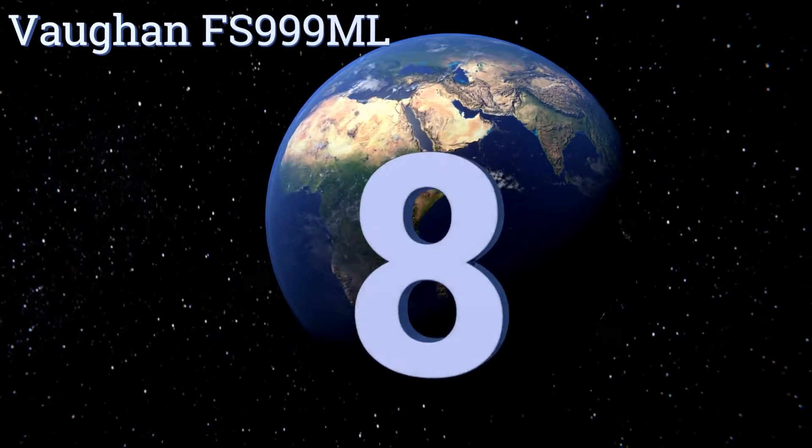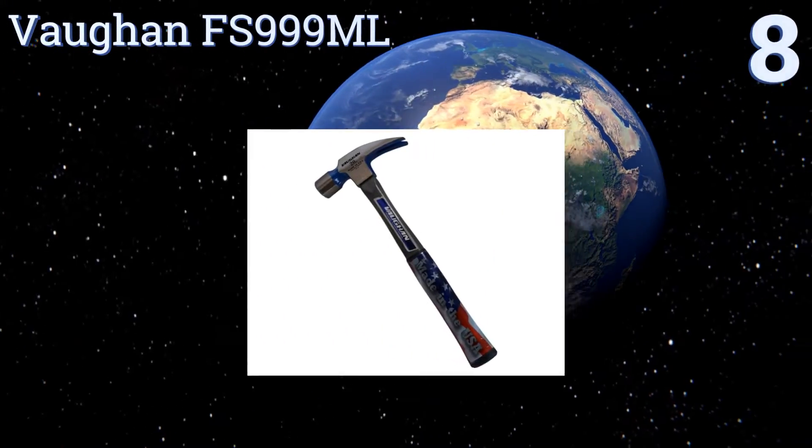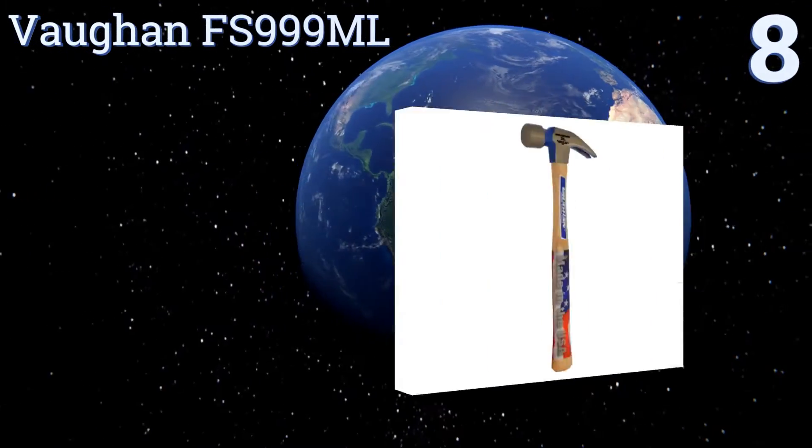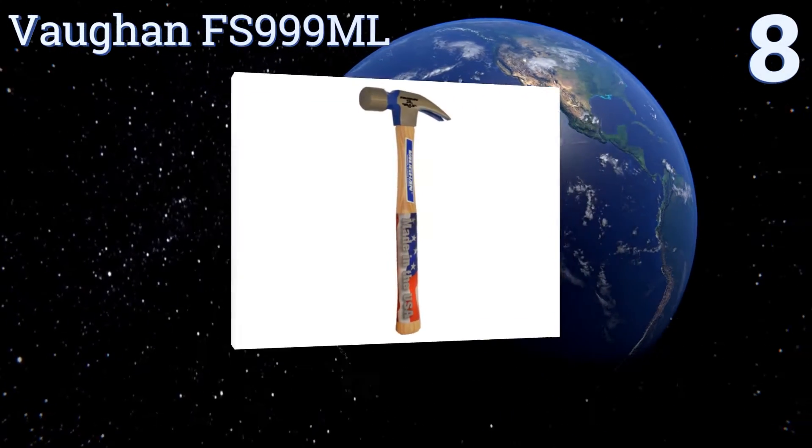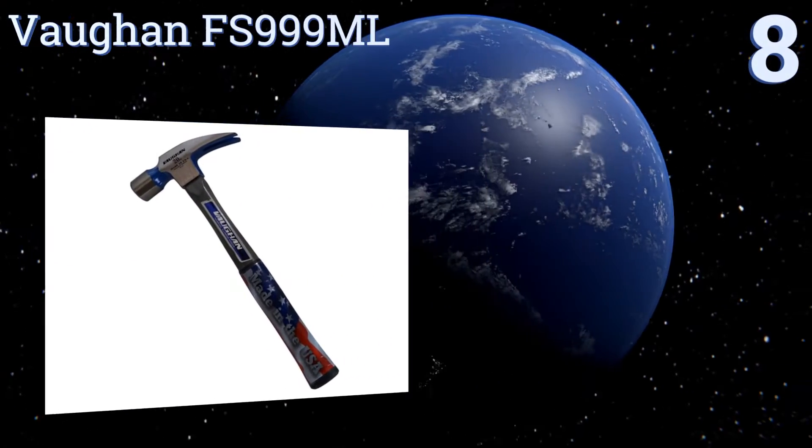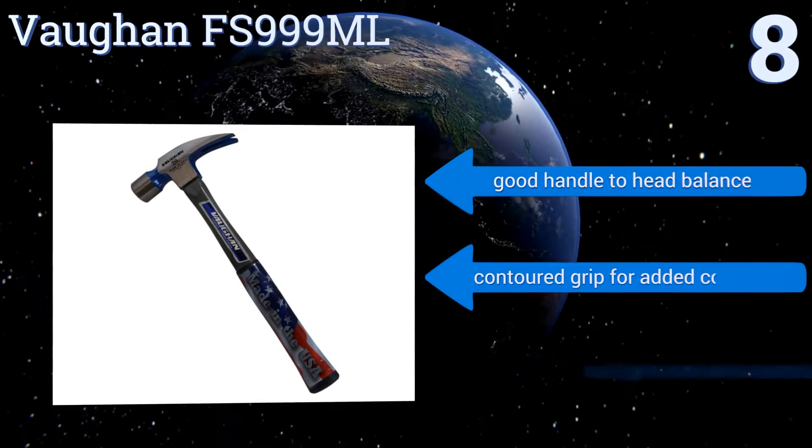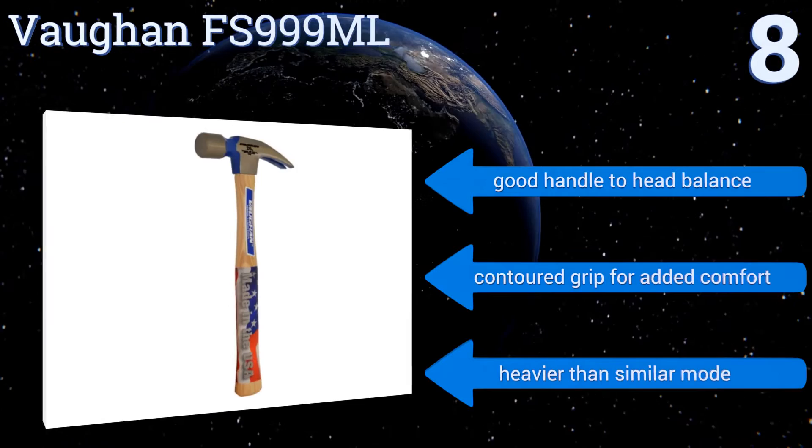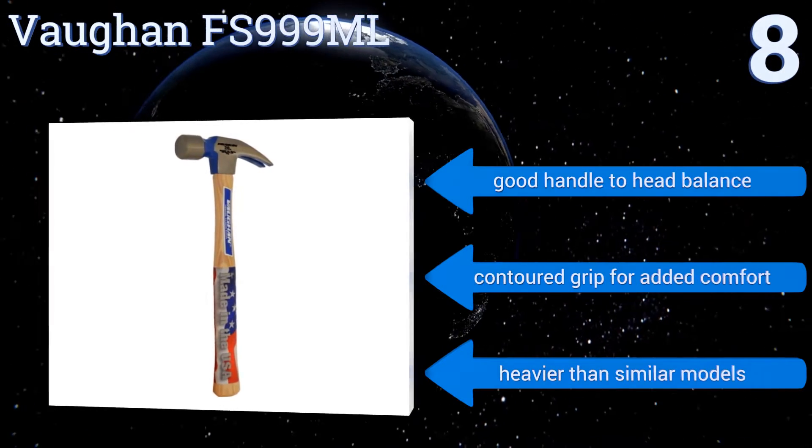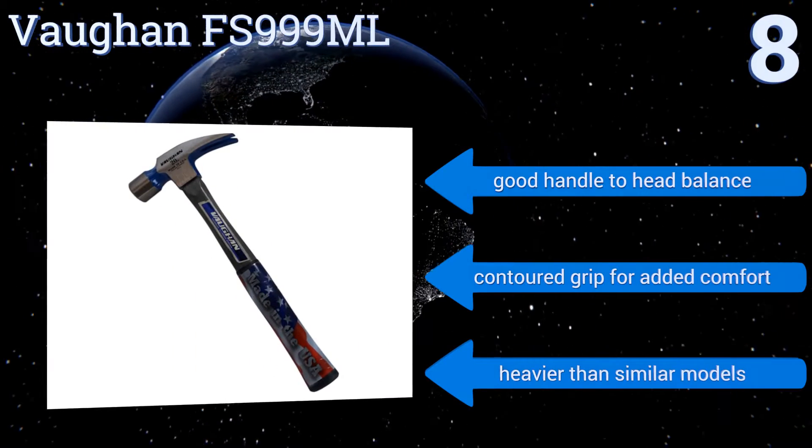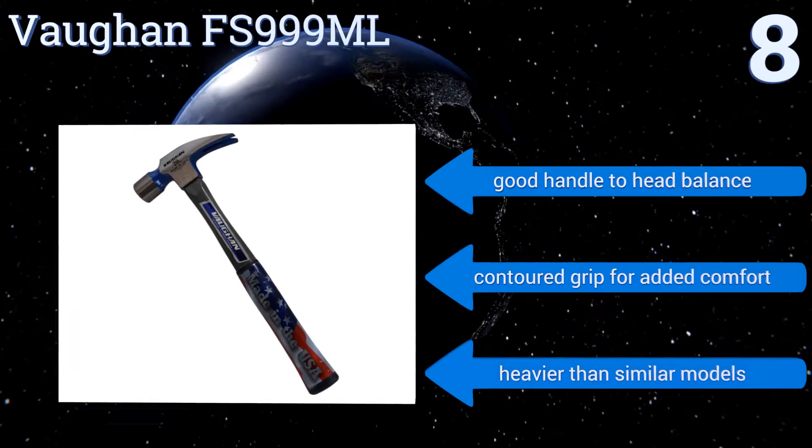Starting off our list at number eight, the Vaughan FS999 ML is a great all-purpose option for anyone who does as much carpentry and framing work as they do electrical work. The popular unit is treated to give its striking face added temper allowing for more accurate blows. It has a good handle to head balance and a contoured grip for added comfort. However, it is heavier than similar models.